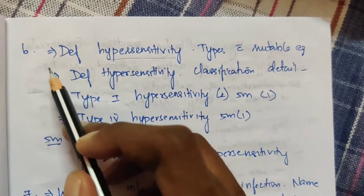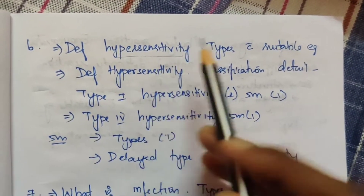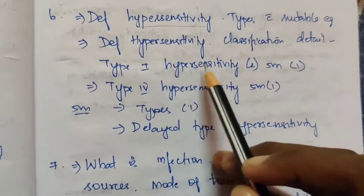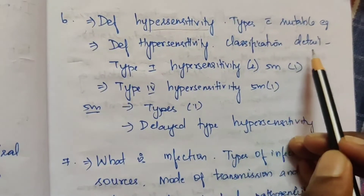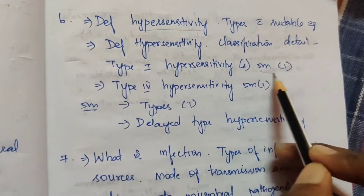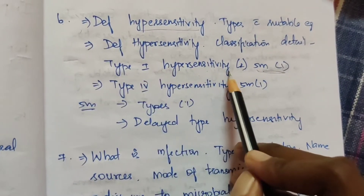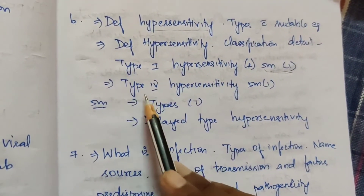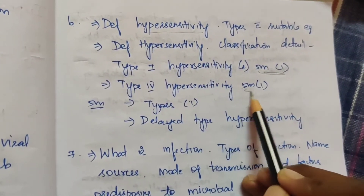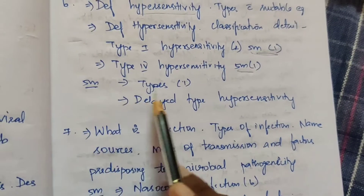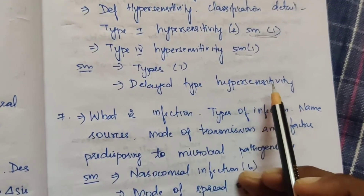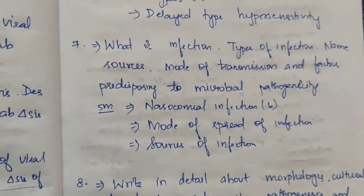The fourth topic is hypersensitivity. In the 15-mark questions: define hypersensitivity, its types, and suitable examples. Define hypersensitivity, classification, and detail about type 1 hypersensitivity — this appeared 2 times in 15 marks. One question on type 1 hypersensitivity and one on type 4 hypersensitivity in 15 marks. Delayed type hypersensitivity is also covered.